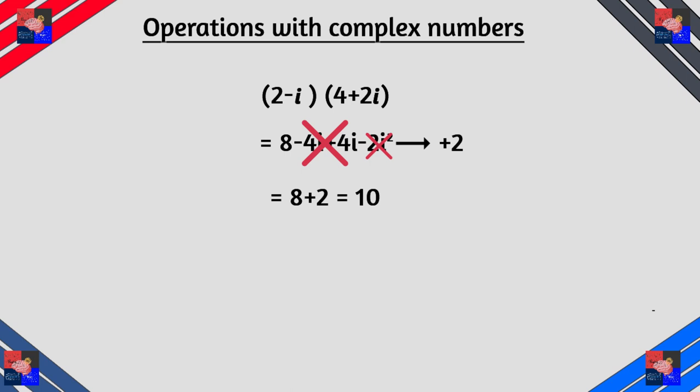And instead of negative 2i squared, we know that i squared is equals to negative 1. So this becomes negative 2 times negative 1 which is equals to positive 2. So we have 8 plus 2 which is equals to 10. Yes complex numbers can multiply to give real numbers.